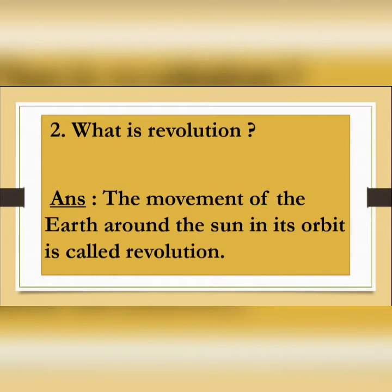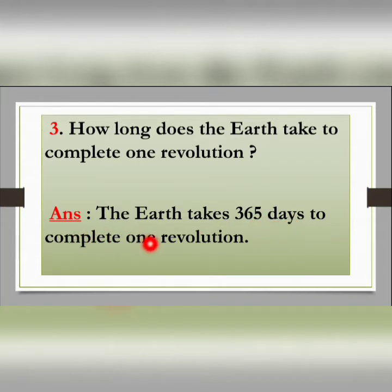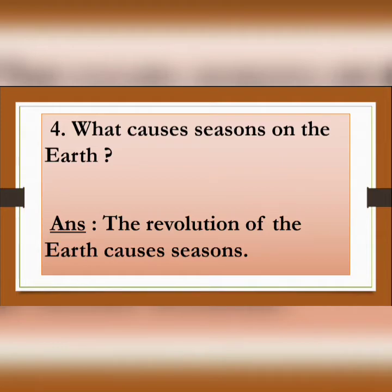Question number D3: How long does the Earth take to complete one revolution? Answer: The Earth takes 365 days to complete one revolution — that means the movement of the Earth around the sun. Question number D4: What causes seasons on the Earth? Answer: The revolution of the Earth causes seasons.